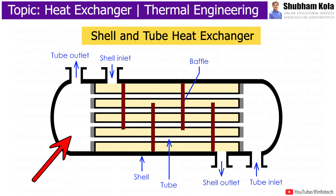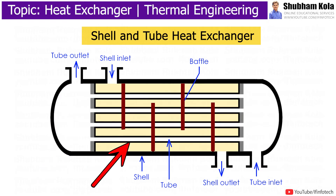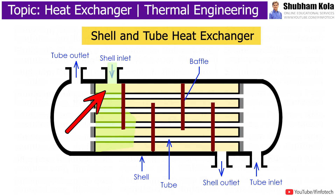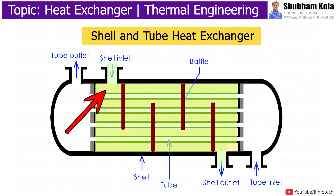This allows for thermal expansion as the heat exchanger is heated. The shell and tube heat exchanger is split into two main systems, referred to as shell side and tube side. Each system has one flowing medium. The flowing medium within the tubes is known as tube side medium, and the flowing medium outside of tubes is known as shell side medium.